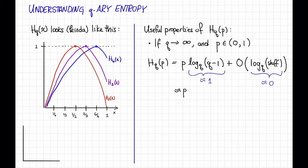In pictures, that means that for really large q, the q-ary entropy looks something like this. That is, it mostly looks like the line H_q(p) = p, and then there's this little doohickey at the end.